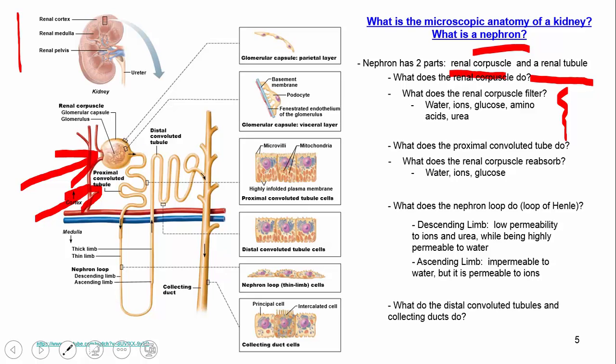After that we have the distal convoluted tubule, followed by the collecting duct — this is our soon-to-be urine. The final touches on the urine involve absorbing even more water before elimination if there is increased release of antidiuretic hormone. Antidiuretic hormone causes your body to reabsorb more water so you're not urinating as much. Interestingly, caffeine — like in coffee — reduces your body's ability to produce antidiuretic hormone, so the net effect is that you urinate more often and lose more water.